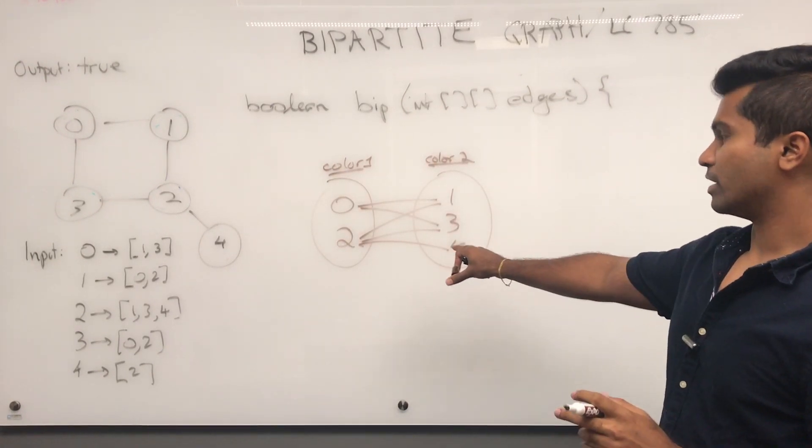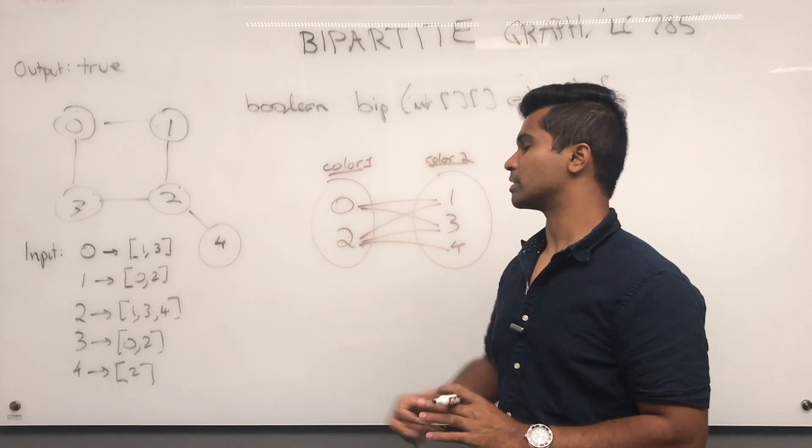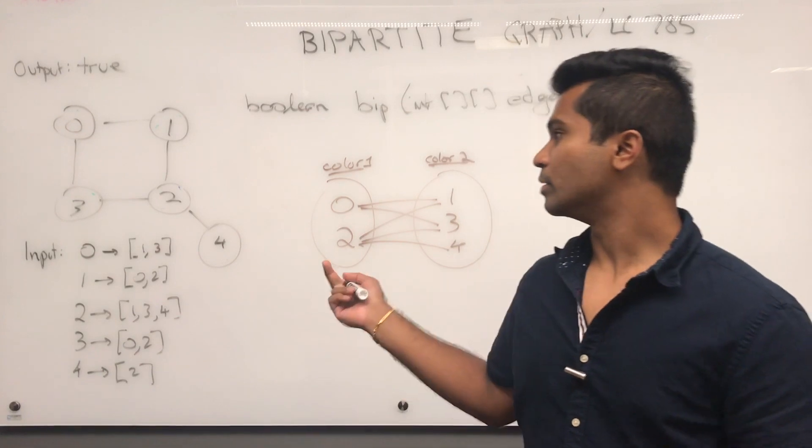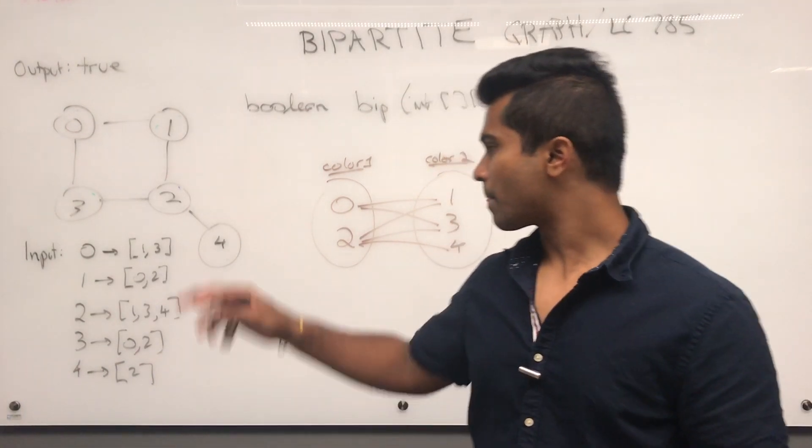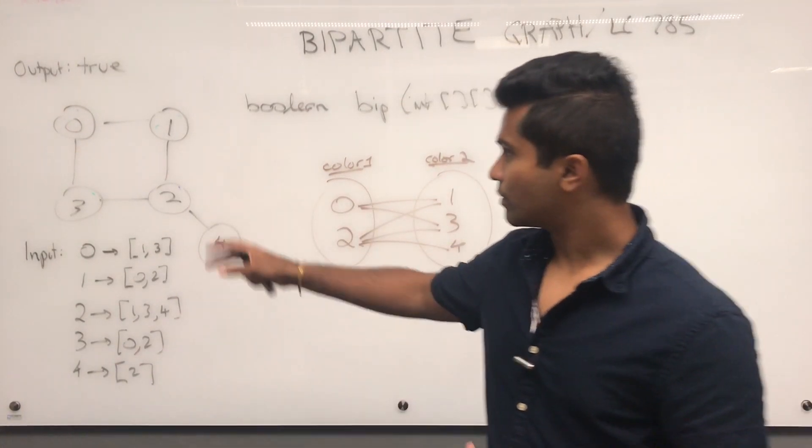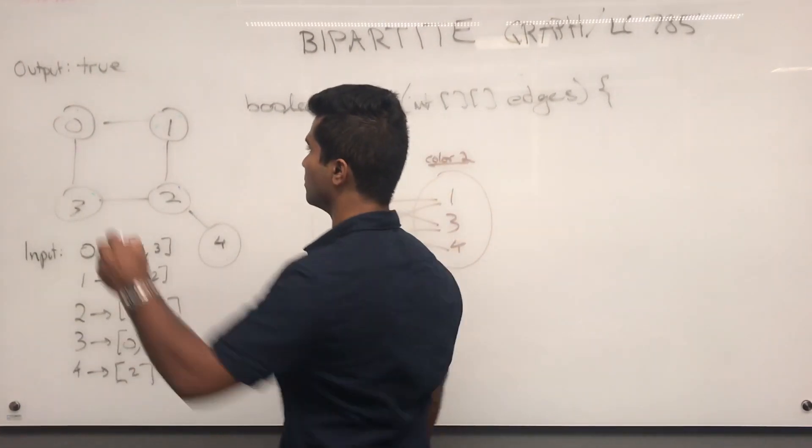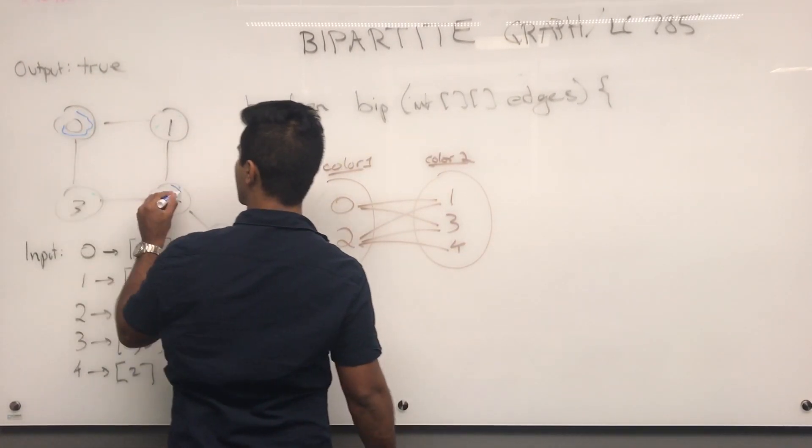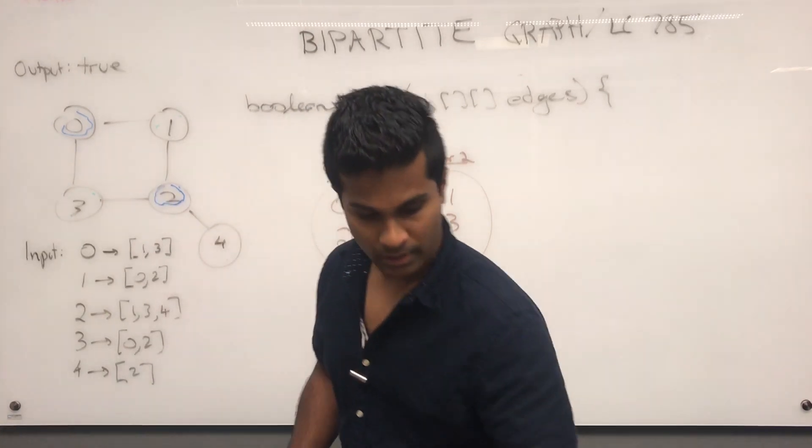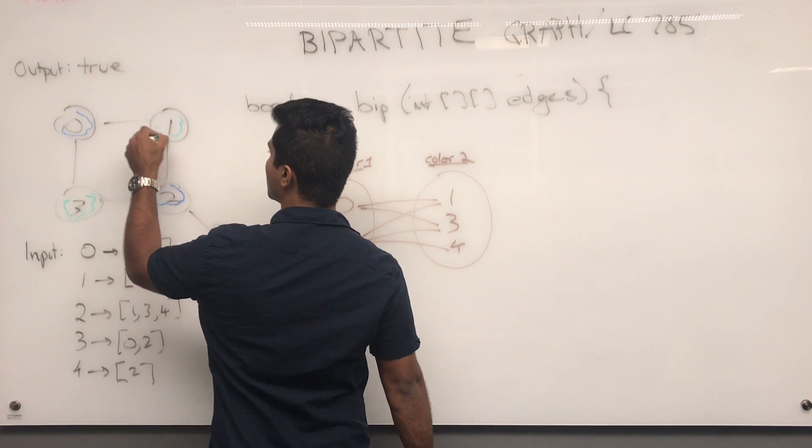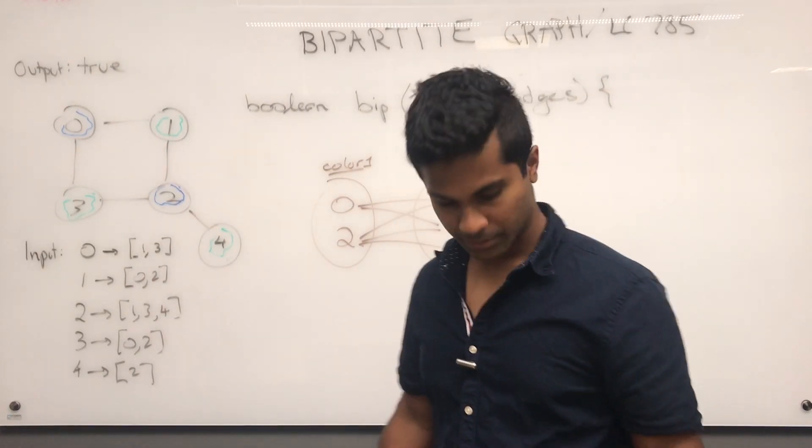Now each set is going to be color 1 and color 2. Now because we can split the nodes into separate parts like this, this can also become a graph coloring problem, which is how I'm going to be doing it with the BFS approach. So for example, this would have blue, and this would be blue, and this would be green, and green. So every single node has neighbors which are a different color.